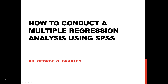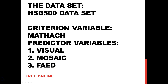Hello, my name is George C. Bradley and today's lesson is on how to conduct a multiple regression analysis using SPSS. Multiple regression is used to determine the correlation between a criterion variable and a combination of two or more predictor variables. It is one of the most widely used statistical techniques in educational research. The popularity of multiple regression stems from its versatility and the amount of information it yields about relationships among variables.